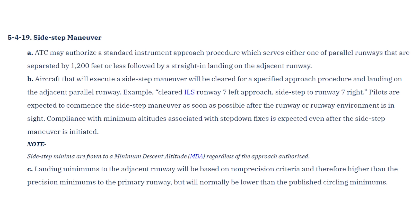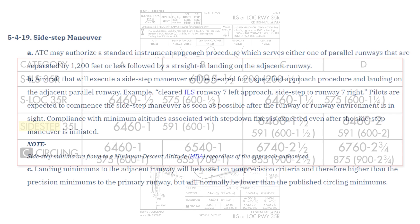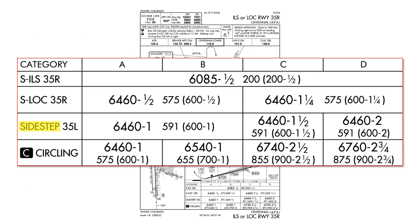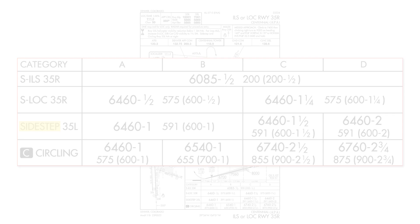Pilots are expected to commence the sidestep maneuver as soon as possible after the runway environment is in sight. The minimums are based on non-precision criteria, so the minimum listed on the approach plate is an MDA and is higher than the precision decision altitude of the ILS, though it can still be lower than a circling minimum.